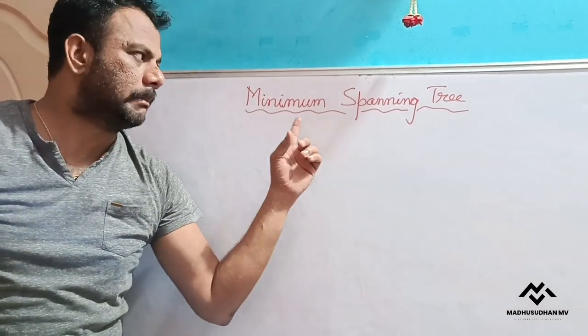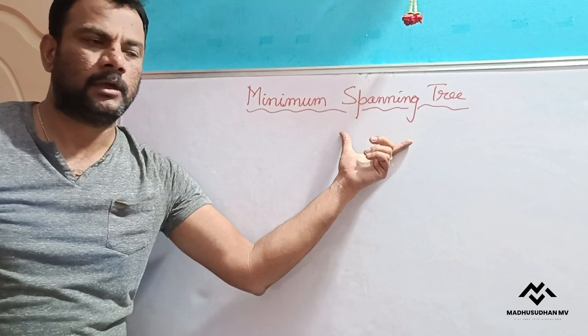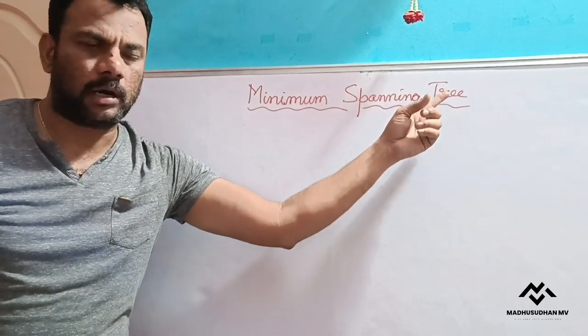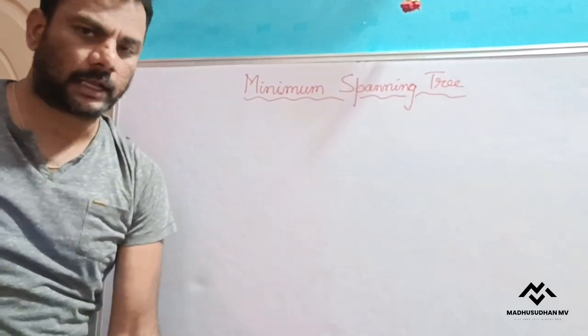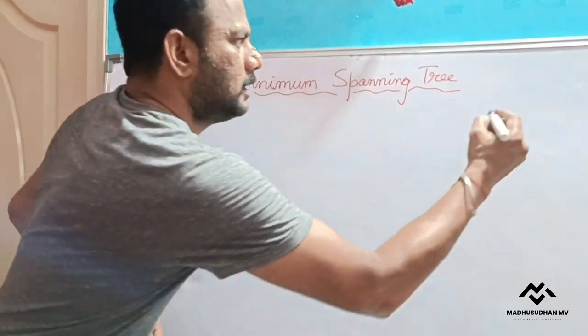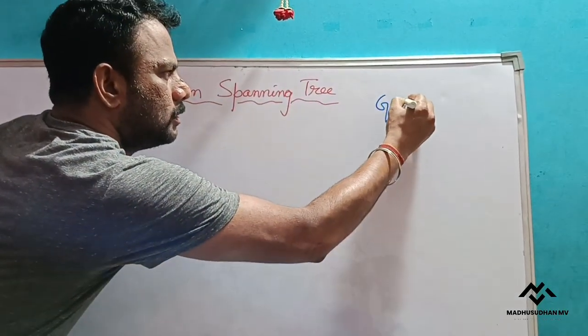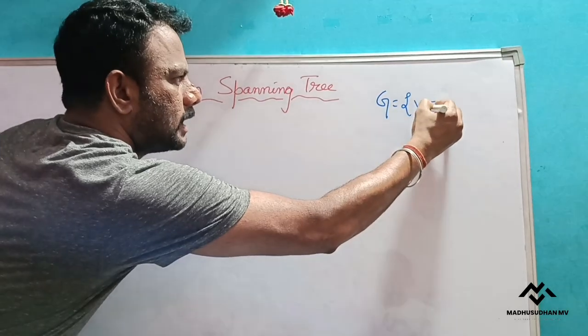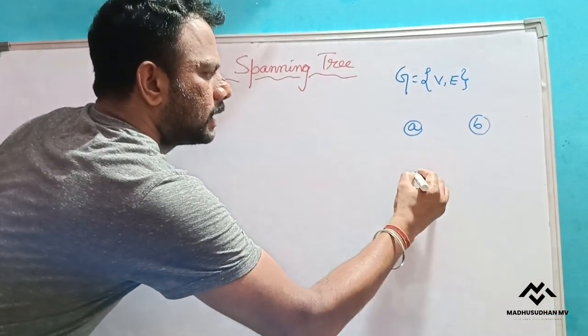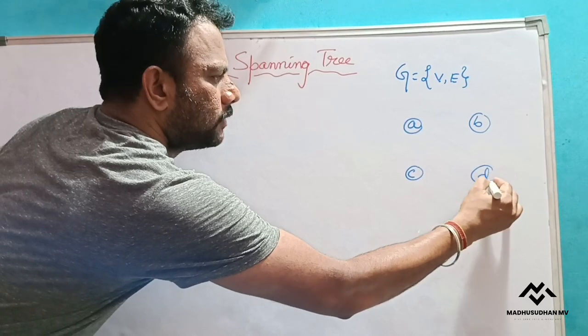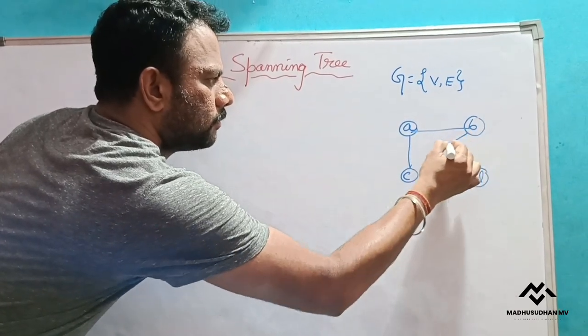In this video I am going to explain about minimum spanning tree. So we know what you already know what you mean by tree. So here given one graph. One graph is defined as a set of vertices and edges. Let us take some connected weighted graph, a simple one.